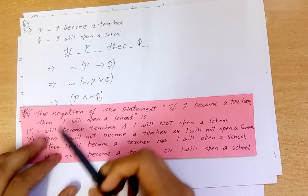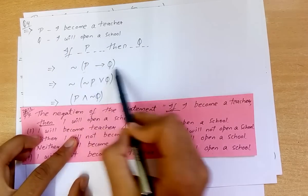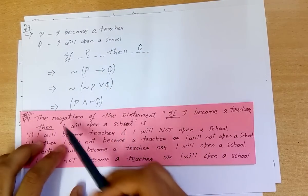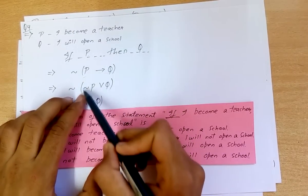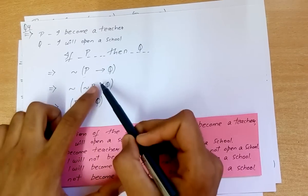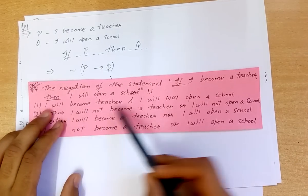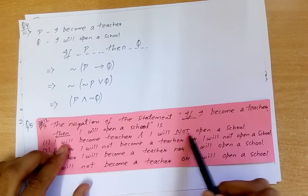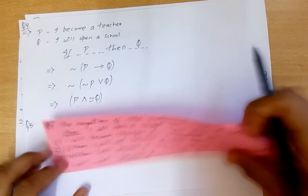Question four: the negation of the statement 'If I become a teacher then I will open a school.' This is a P implies Q type statement, where P = 'I become a teacher' and Q = 'I will open a school.' The negation of P implies Q: since P implies Q equals negation of P or Q, applying negation changes OR to AND, giving P and negation of Q.